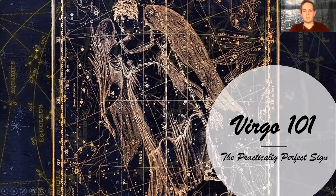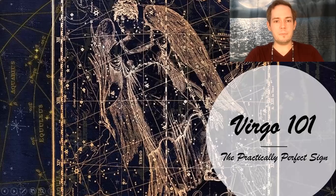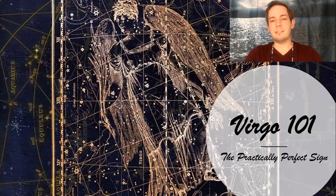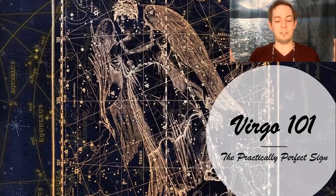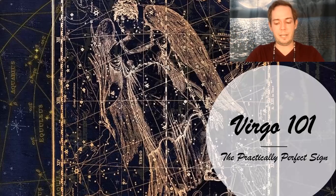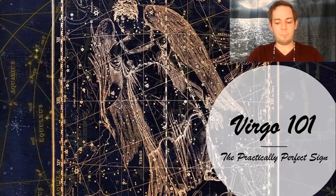Virgo. Here we can see a nice constellation map of Virgo. One of the things that I've learned about Virgo is that she is the practically perfect sign. And I say she because each sign is associated with a gender, but obviously there are male Virgos and female Virgos and everybody in between.